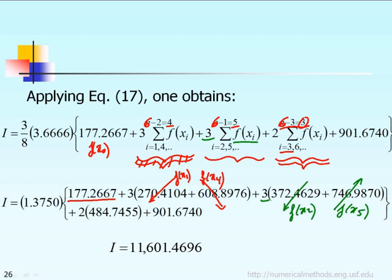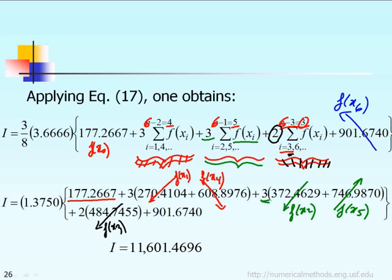That green term is with a factor of 3 that comes from this term right here. The next term has a coefficient of 2 in the front — basically 2 times f at x3, as shown in black. And then the last term is f evaluated at x6. So when you substitute into that, you get the integral equal to 11601, which is very close to the exact answer.